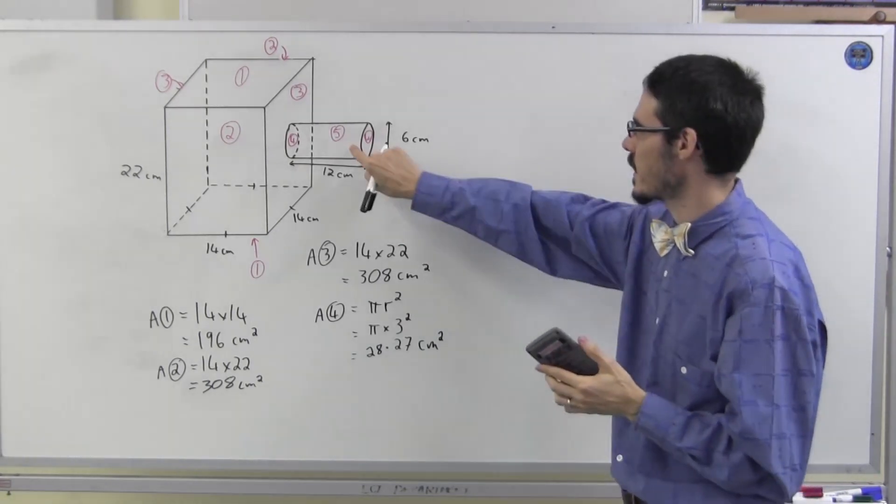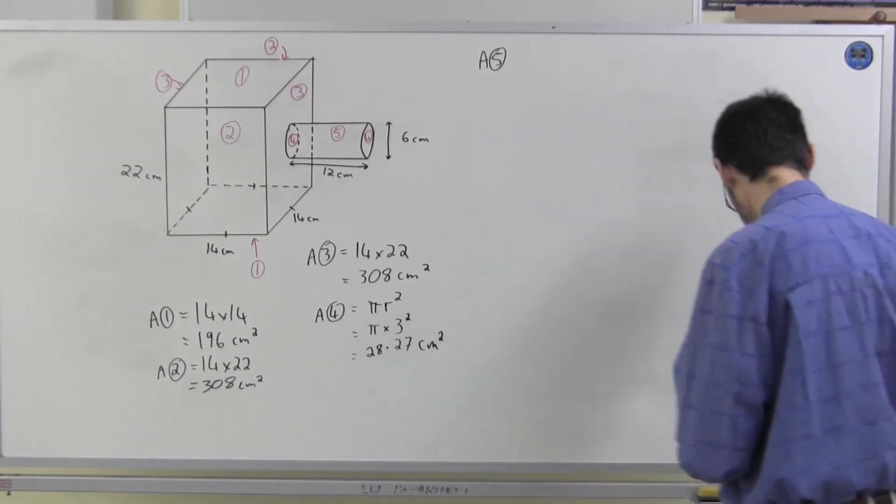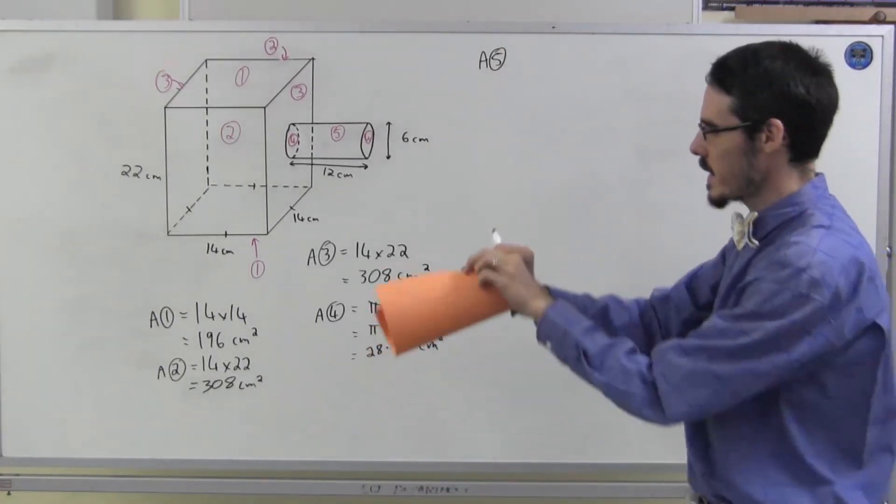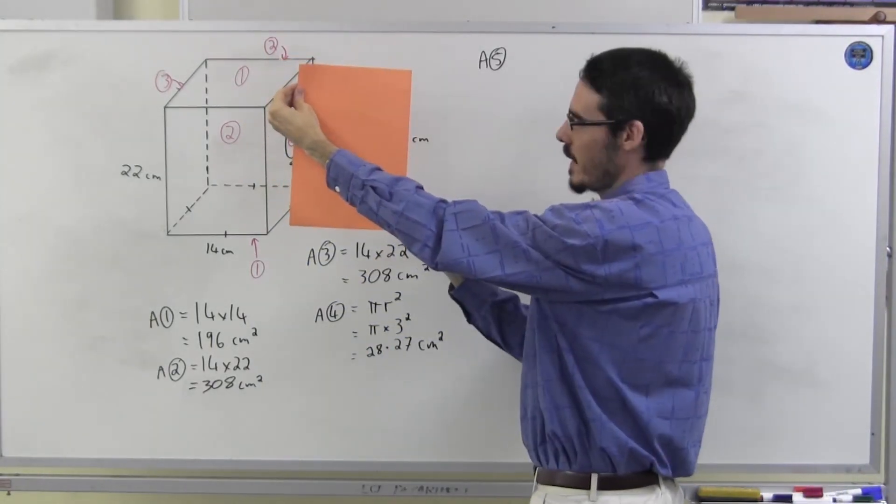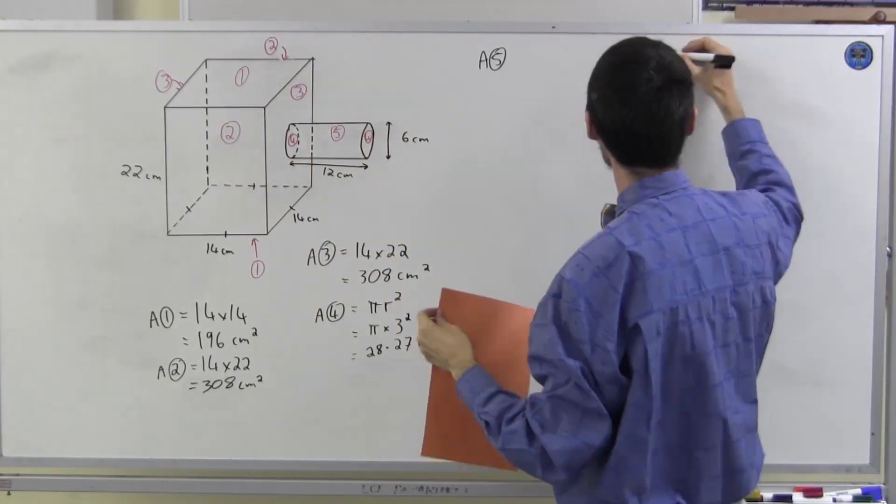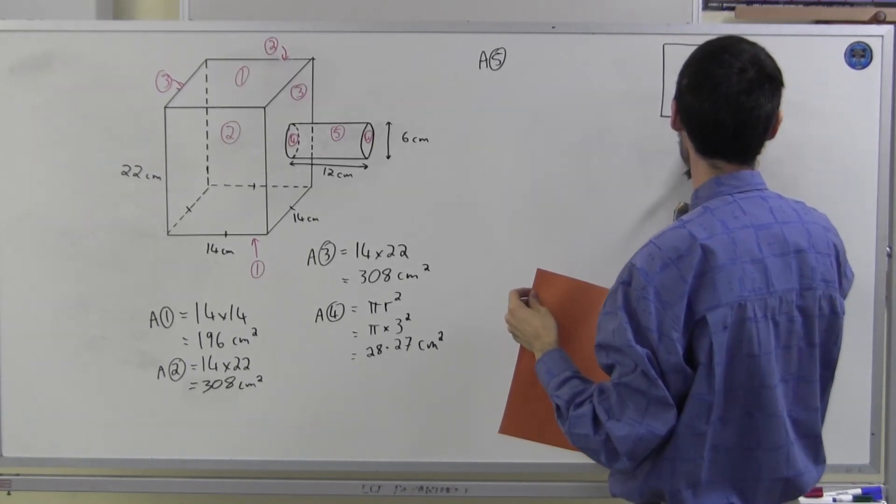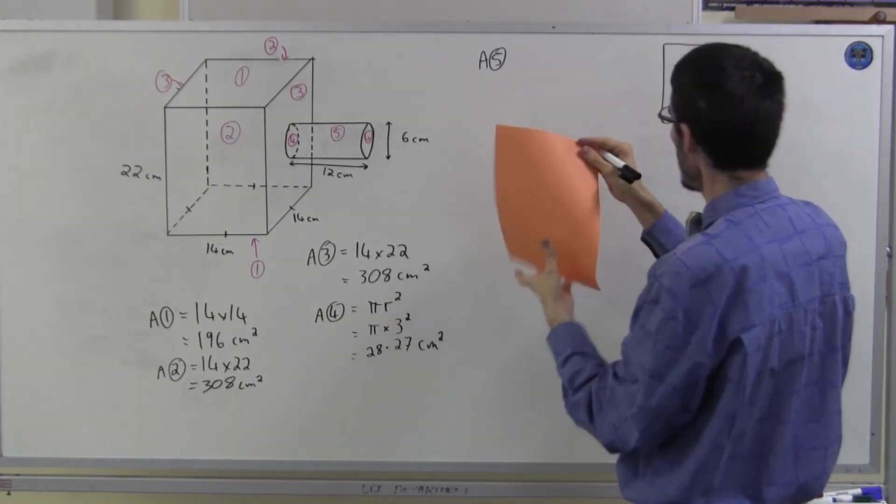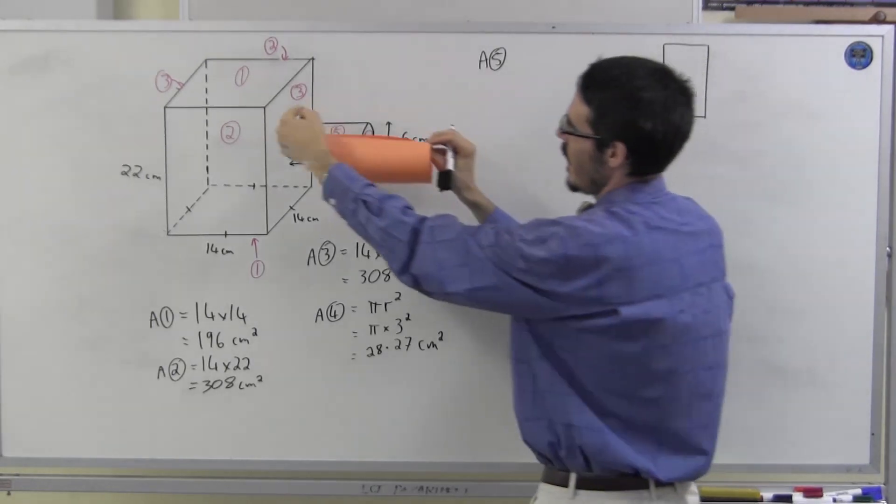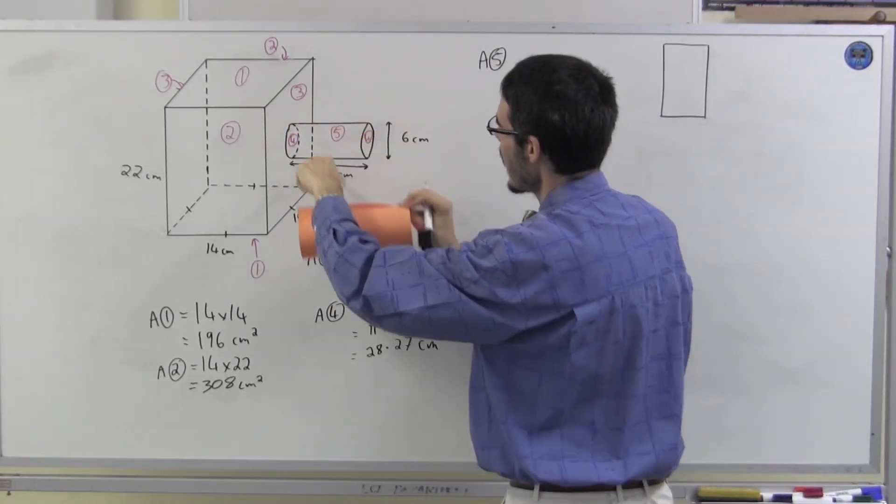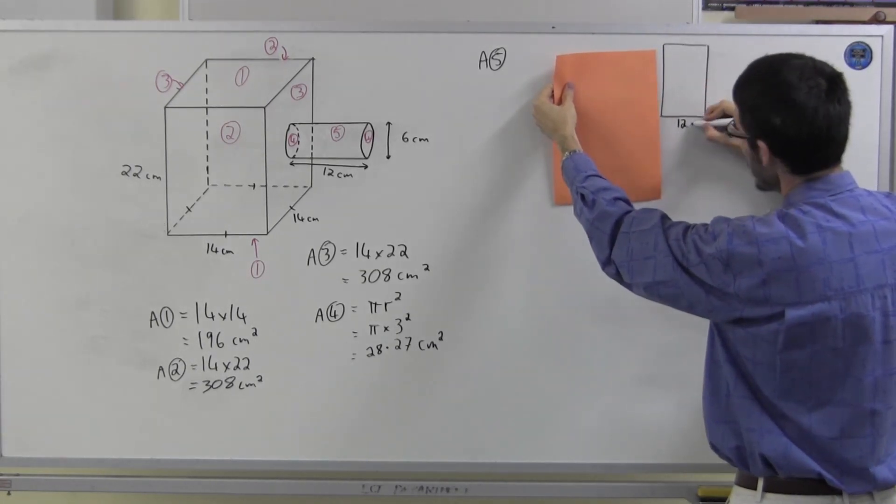That only leaves us with this curved surface. Remember, it's a cylinder. If I unfold it, I'm going to get a rectangle. So let me draw the rectangle. It's just a rough sketch. So the length of that rectangle... Sorry, let me get the right words. I'm going to try and avoid it. This height of the cylinder, which is 12, becomes that length. 12 centimetres.